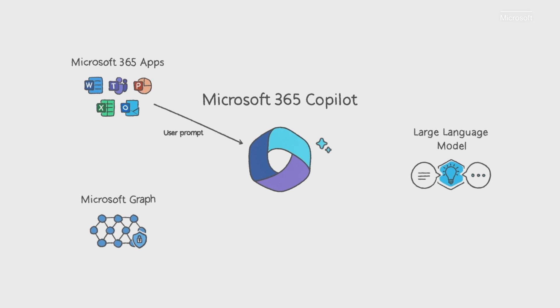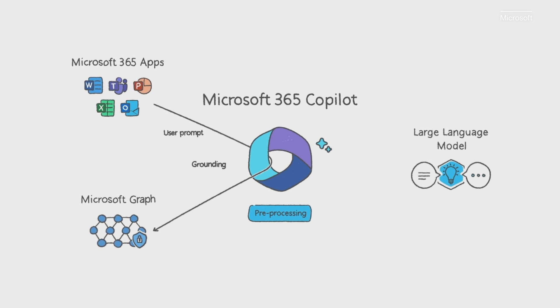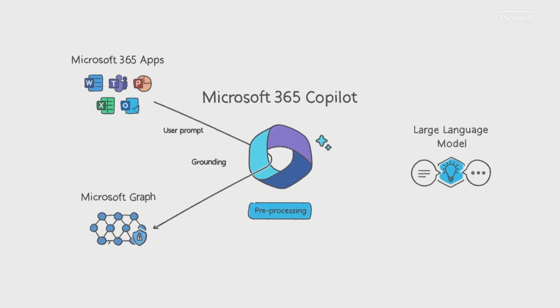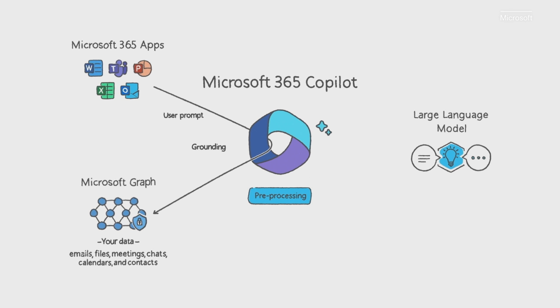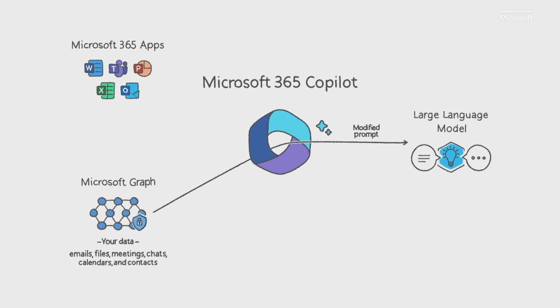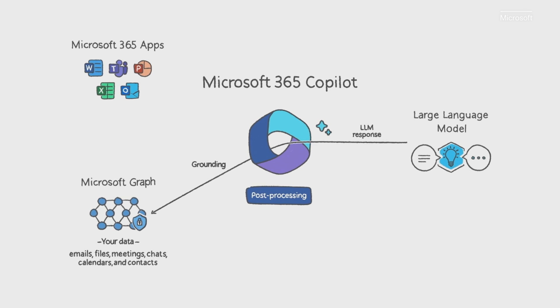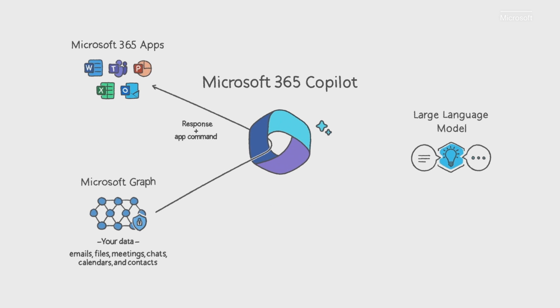It starts with a prompt from you in an app. Copilot pre-processes the prompt through an approach called grounding, which improves the quality of the prompt so you get answers that are relevant and actionable. One of the most important parts of grounding is making a call to the Microsoft Graph to retrieve your business content and context. Copilot combines this user data from the graph with other inputs to improve the prompt, then sends that modified prompt to the LLM. Copilot takes the response from the LLM and post-processes it — this includes additional grounding calls to the graph, responsible AI checks, security, compliance, and privacy reviews, and command generation. Finally, Copilot sends a response to the user and commands back to the apps.